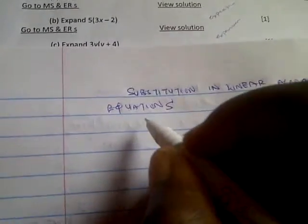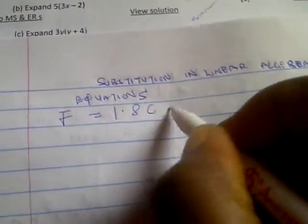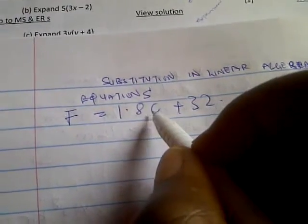Linear algebraic equations are equations of the first order. They are algebraic equations of the first order. For example, this one we're given, F equals 1.8C plus 32, is of the first order because there is nothing that is raised to power 2 or 3.